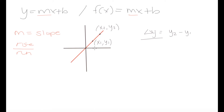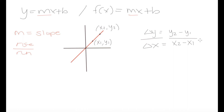Our run is the horizontal change — the change in x — calculated as x2 minus x1. So slope m is determined by the change in our y values over the change in our x values.